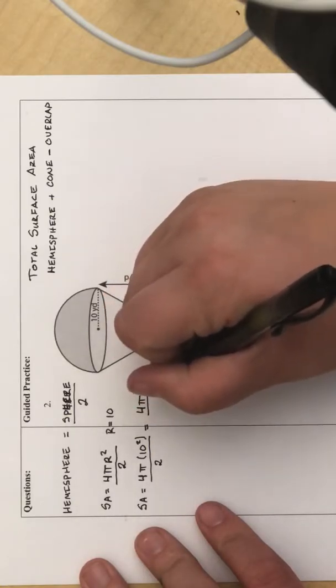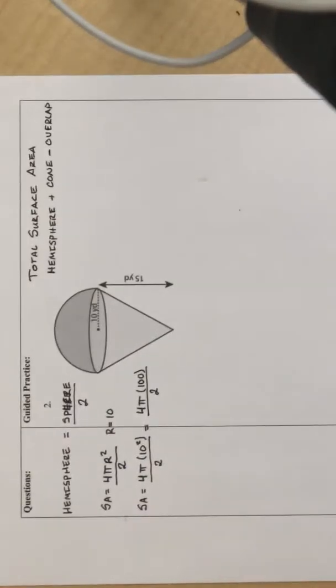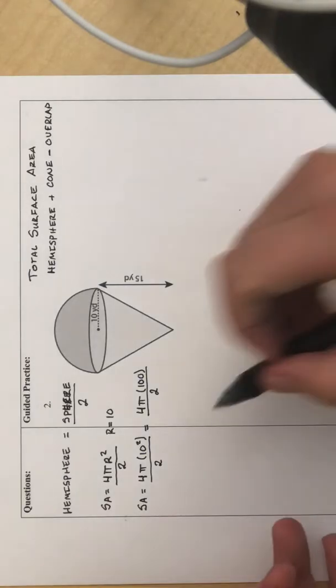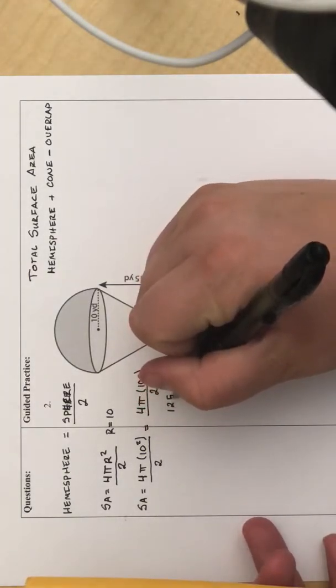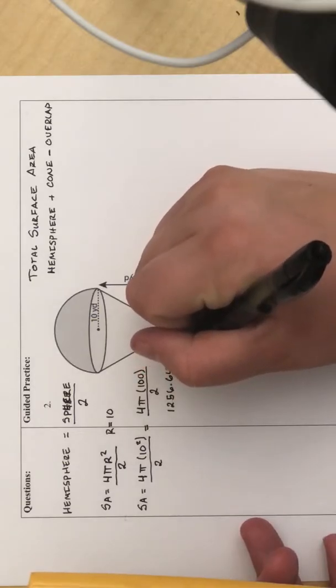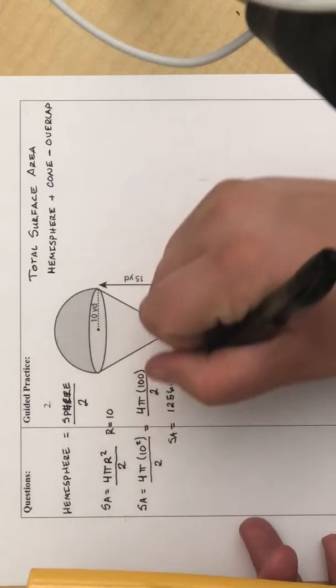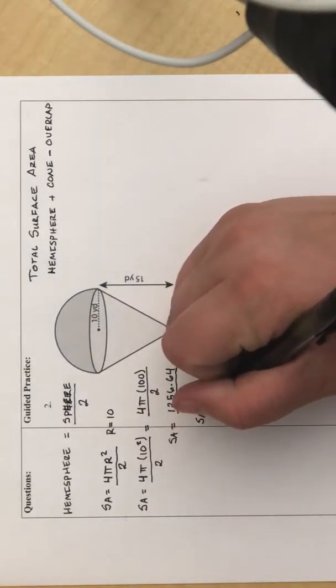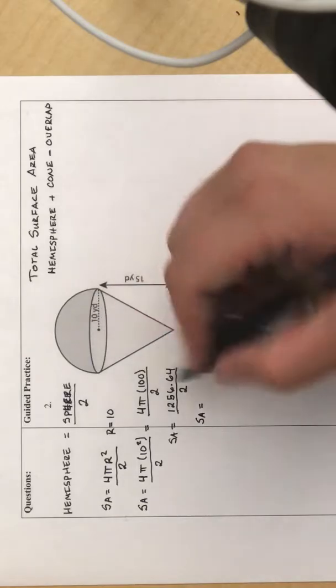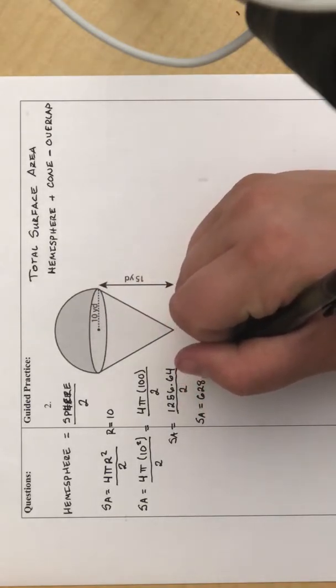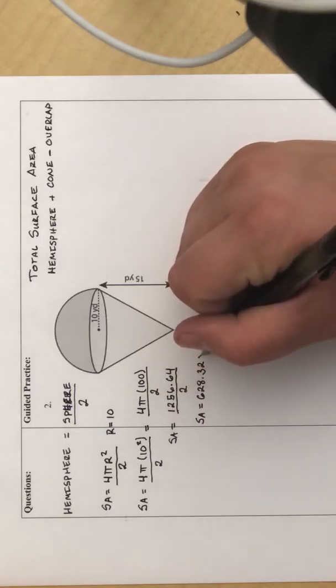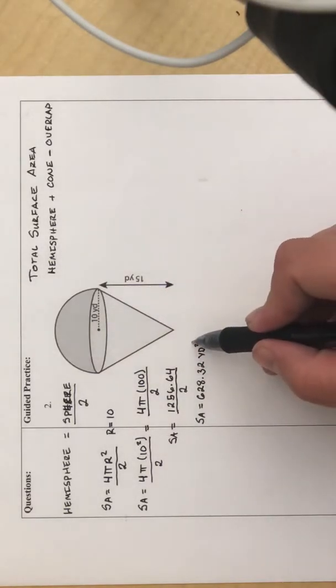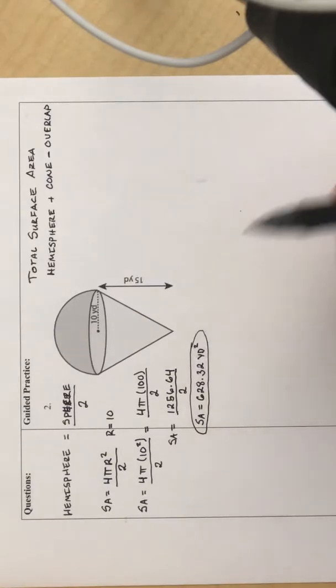So we are going to divide this by 2. 4 times pi times 100 is 1,256.64. And remember, we still have to divide that by 2. And when we do that, we end up with the surface area of the hemisphere being 628.32 yards squared. So that's the first piece, the hemisphere.